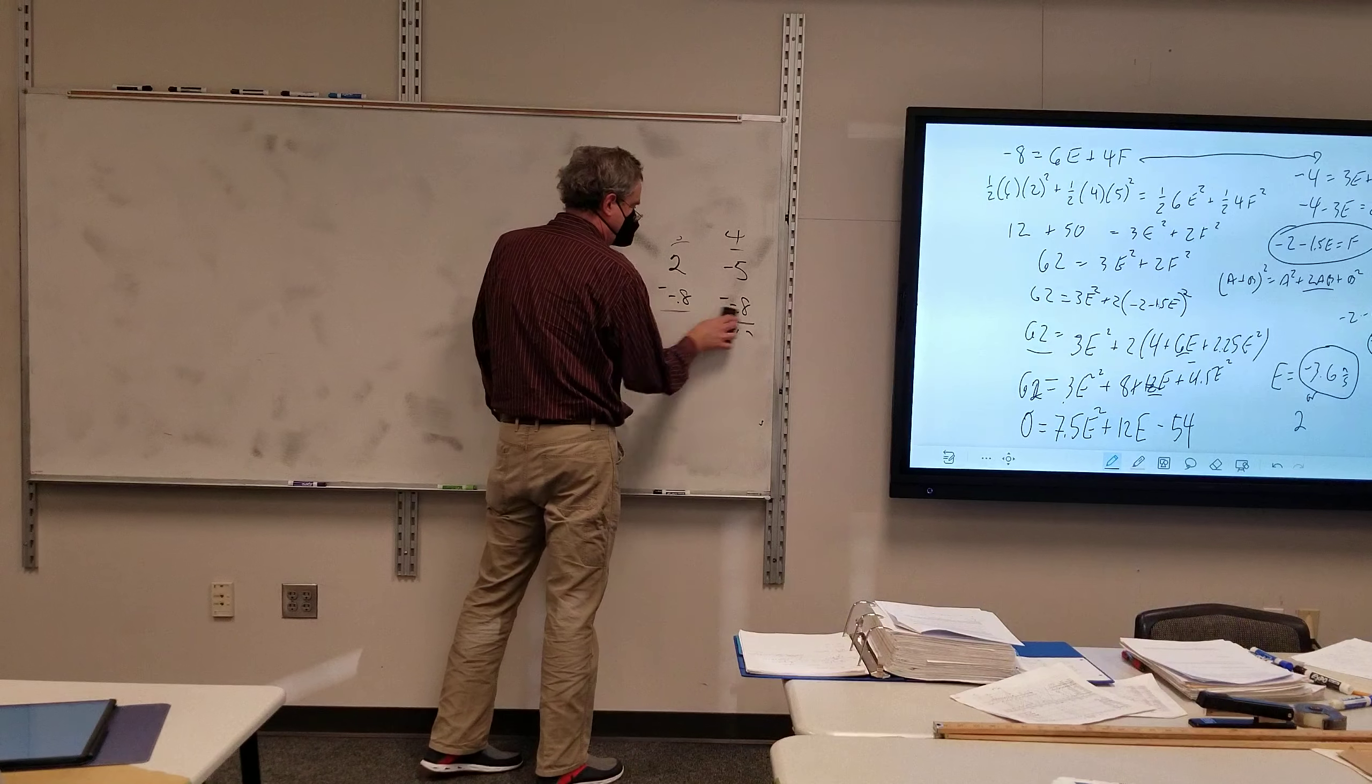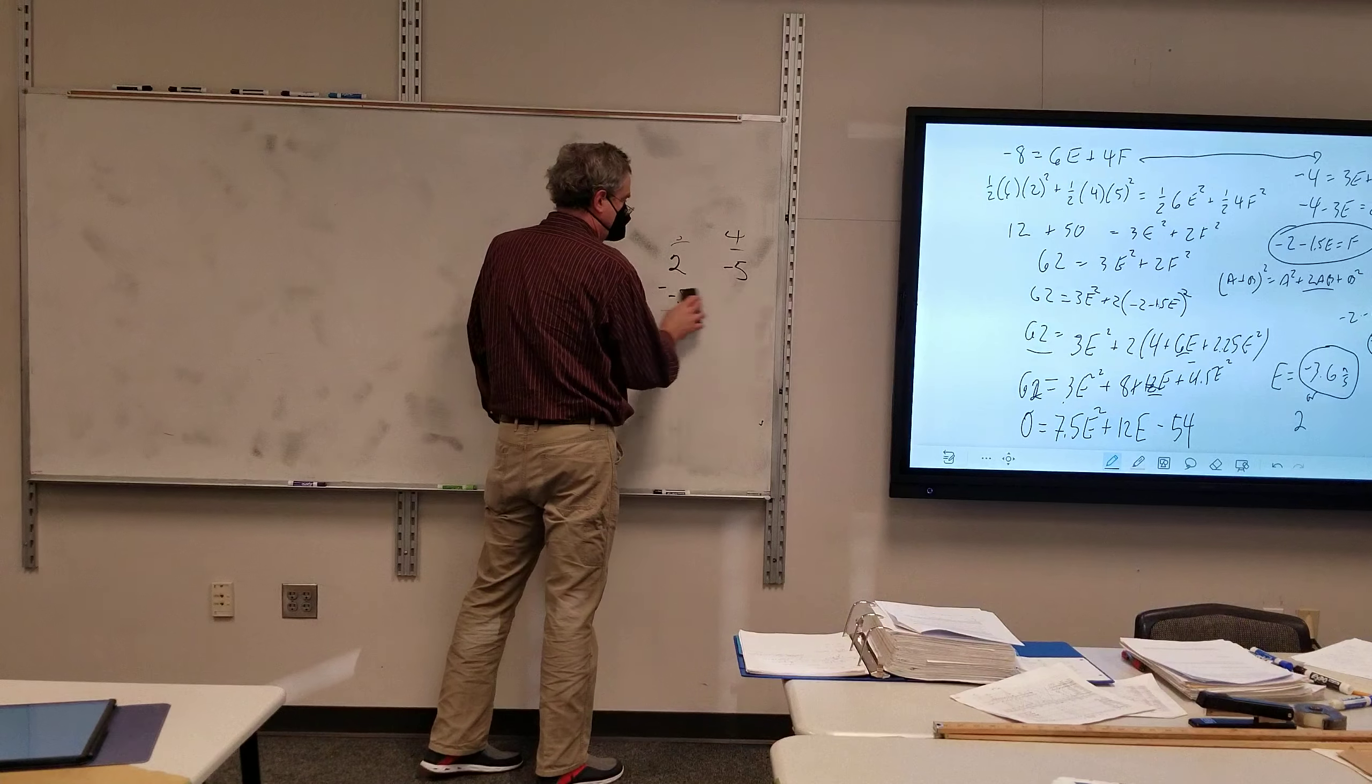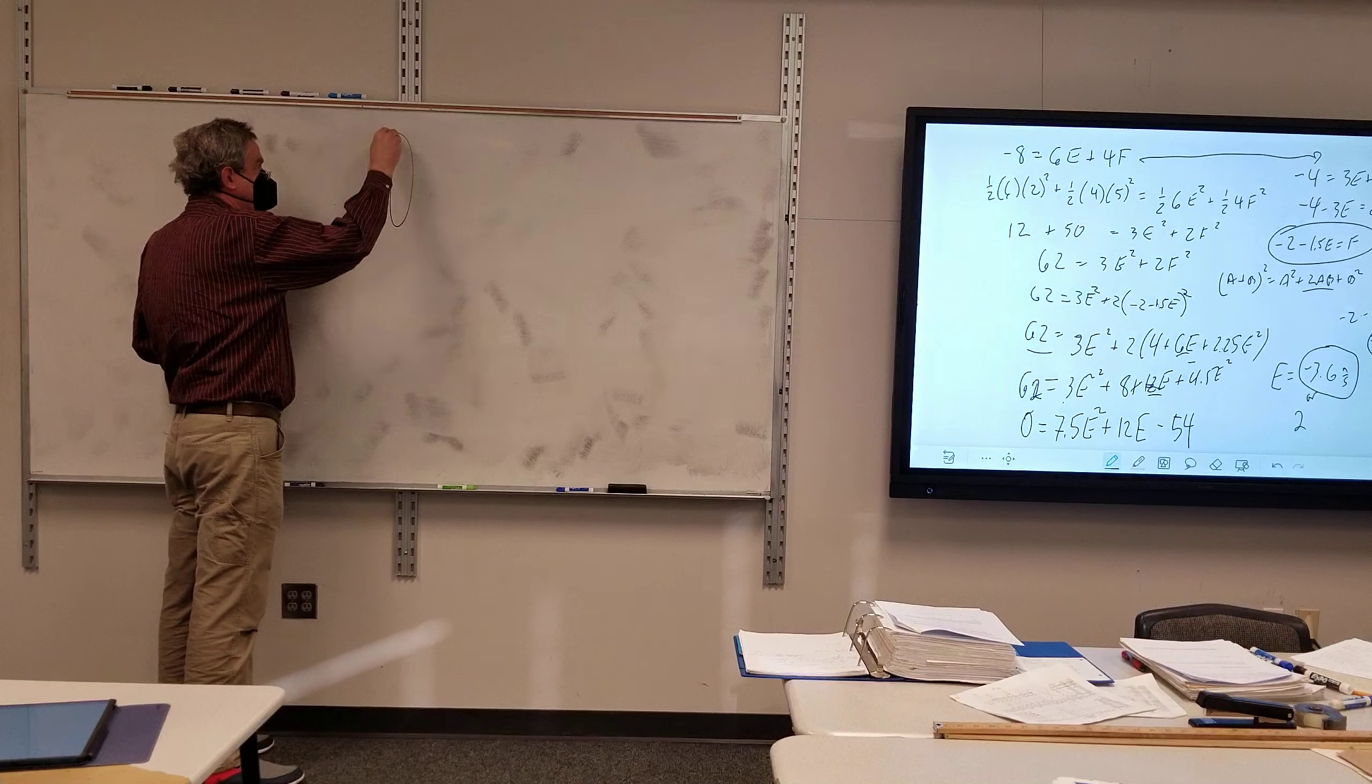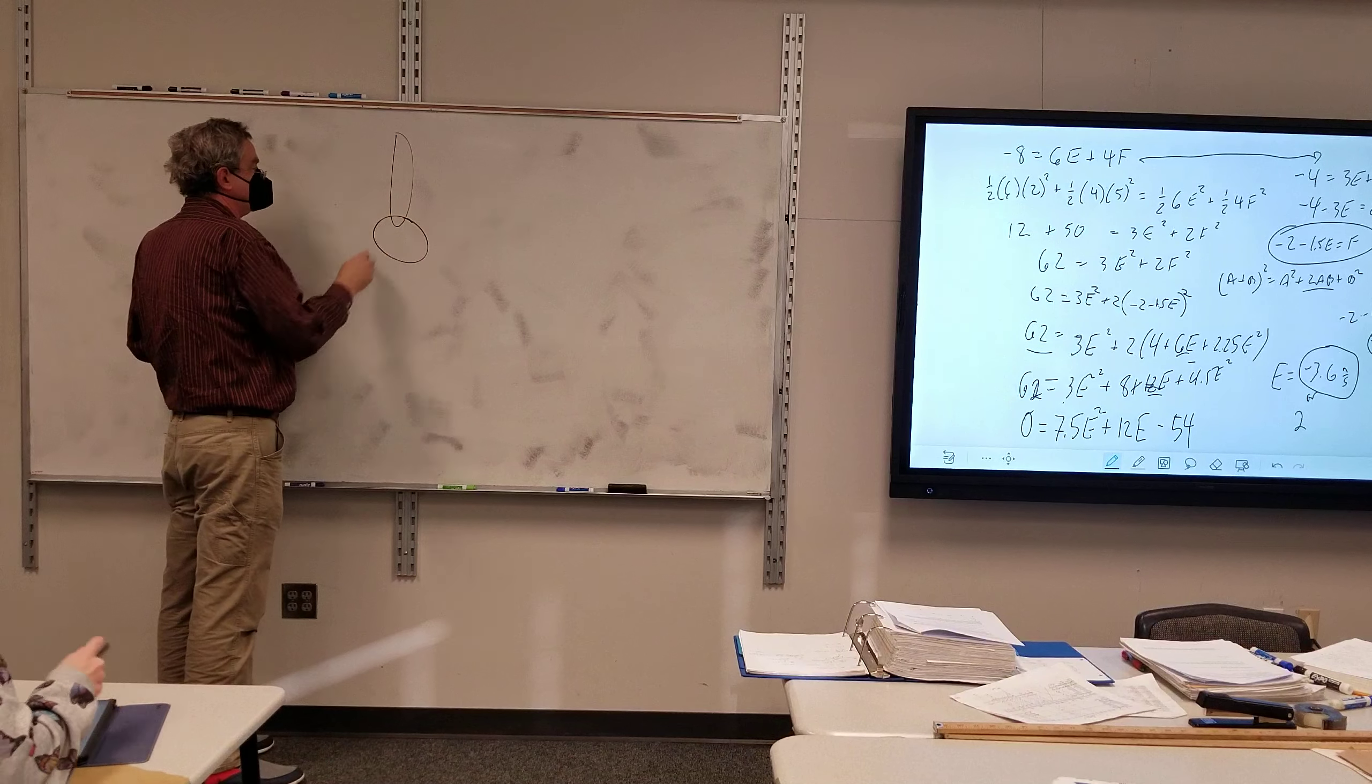So now let's see where the mistake is. Negative 8 was what we had. That was the total momentum because it was 6 times 2 minus 4 times 5. Negative 8.